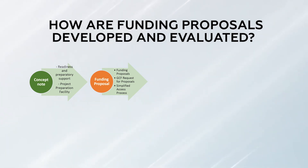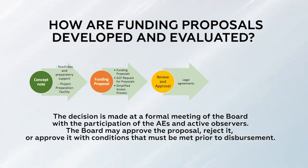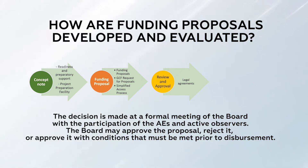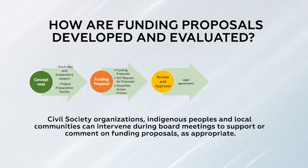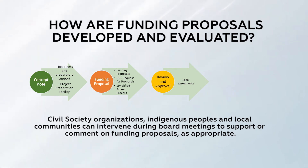The next stage is approval by the board, where the decision is made at a formal GCF board meeting. Funding proposals are not approved between board meetings; approval must occur at a formal meeting with the participation of accredited entities and active observers. The board may approve the proposal, reject it, or approve it with conditions. Observers — CSOs, indigenous peoples, and local communities — can intervene, carrying the voices of national-level stakeholders. We call on our partner networks from the countries where proposals originate to relay any concerns to the board.